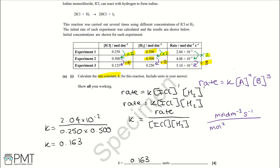Working out the units: the rate has units of mol dm⁻³ s⁻¹, and the two concentrations on the bottom give mol² dm⁻⁶. Cancelling one mol and one dm⁻³ from top and bottom gives units of mol⁻¹ dm³ s⁻¹ for K. To get the four marks for this question, you get a mark for each order of reaction (both first order), a mark for the correct K value, and a mark for correctly working out the units of K.